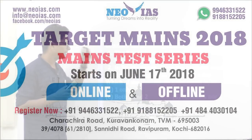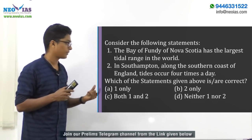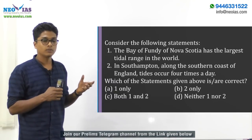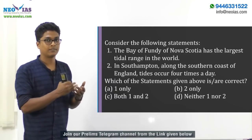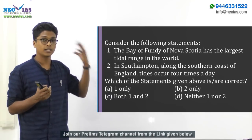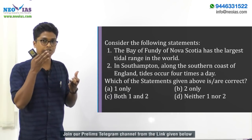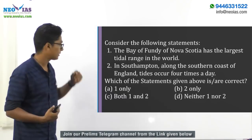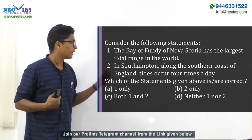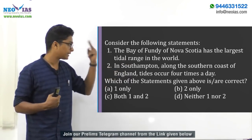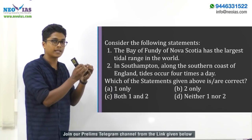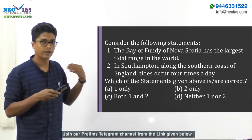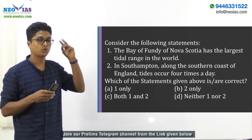The second statement says that in Southampton, along the southern coast of England, tides occur four times a day. Tides are the periodic rise and fall in sea level under the influence of the gravitational attraction of the moon and sun, as well as the centrifugal force due to Earth's rotation. Ideally, without considering the configuration of landmasses, a region should experience tides twice a day.